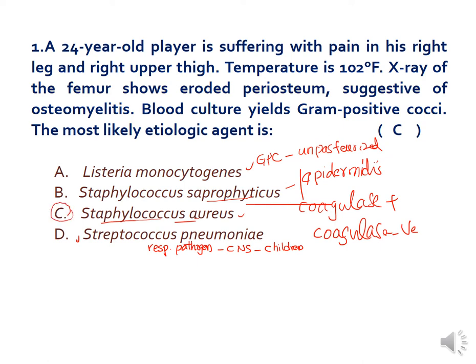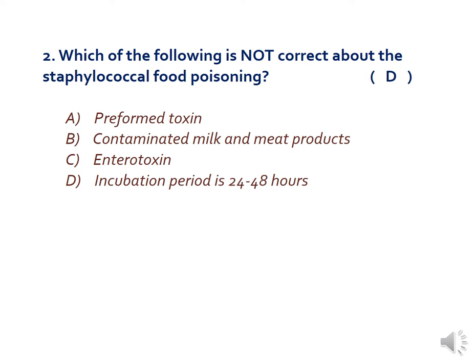The next question asks which of the following is NOT correct about staphylococcal food poisoning. Staphylococcus is responsible for food poisoning by producing enterotoxin F. This toxin is a preformed toxin because foodstuffs left at room temperature for a long time, like milk and meat products, allow bacteria to grow and produce the toxin. Importantly, this preformed toxin shows no signs of spoilage in the food.